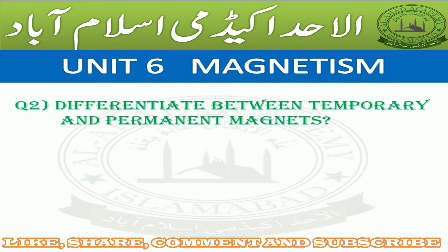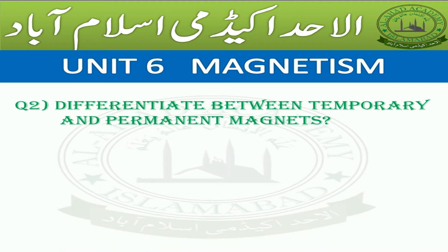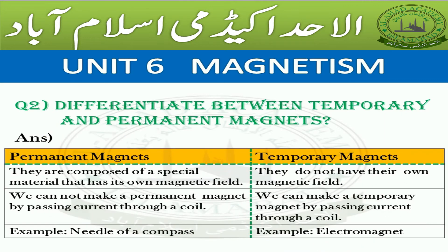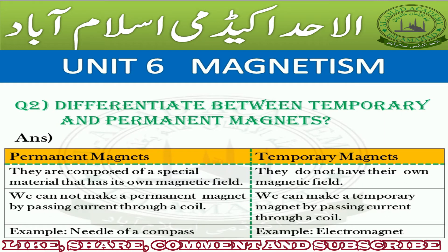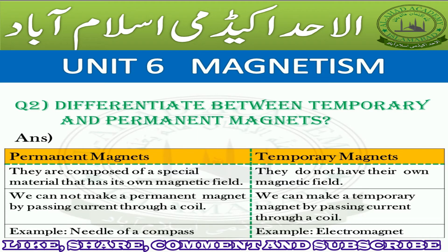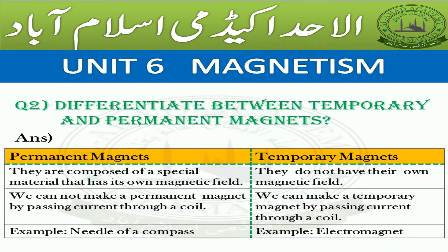Question Number 2: Differentiate between Temporary and Permanent Magnets. Answer: Permanent Magnets are composed of a special material that has its own magnetic field. We cannot make a permanent magnet by passing a current through a coil. Example: the needle of a compass. Temporary Magnets do not have their own magnetic field.